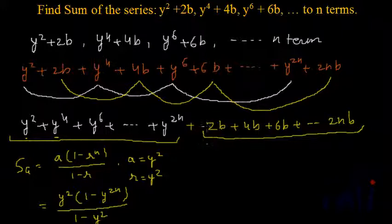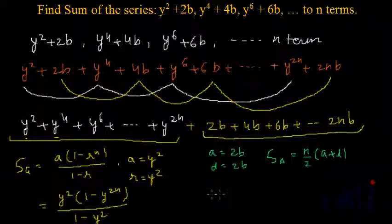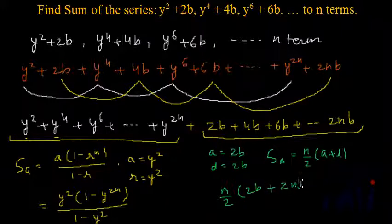For the arithmetical progression, the first term is equal to 2b and the common difference is also equal to 2b. The formula for the sum of an arithmetical progression is n by 2 multiplied by a plus l, where the last term l is 2nb. So the sum will be n by 2 multiplied by a, which is 2b, plus l, which is 2nb.